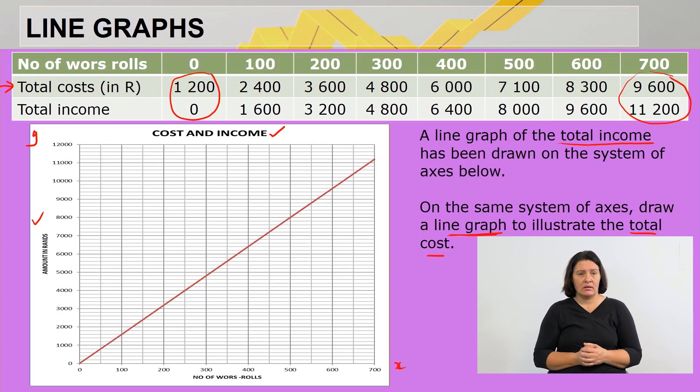Let's start. I'm working with the total cost only. Number of wors rolls is zero, total cost will be R1,200. So I start at zero for the number of wors rolls and the cost should be 1200. If you look clearly, the intervals on the graph are in 200s. We are looking for 1200, so there we go. That will be the first point I'm going to plot: zero wors rolls, total cost R1,200.